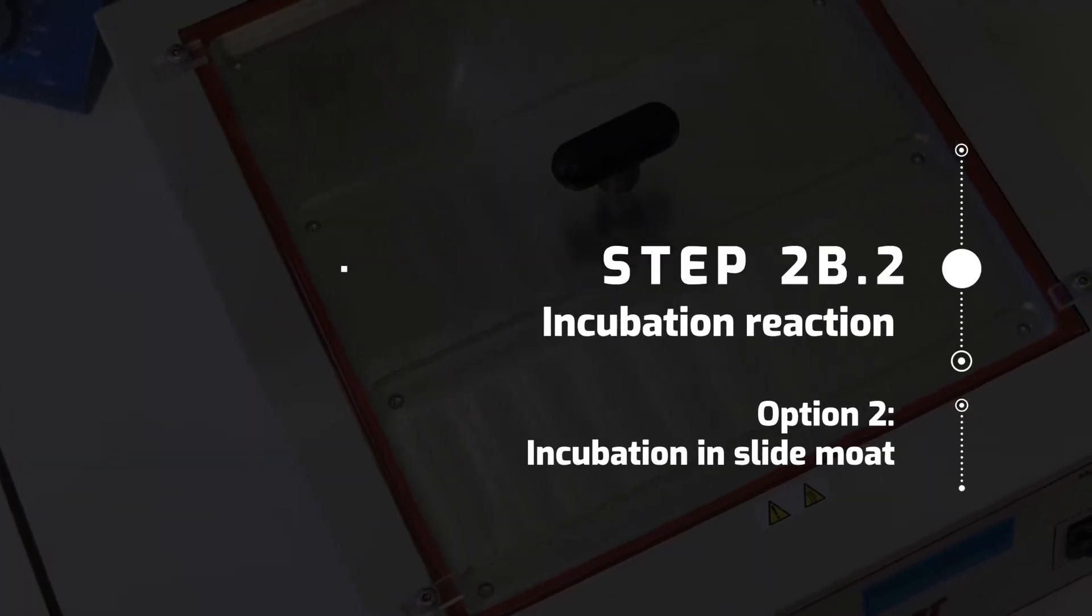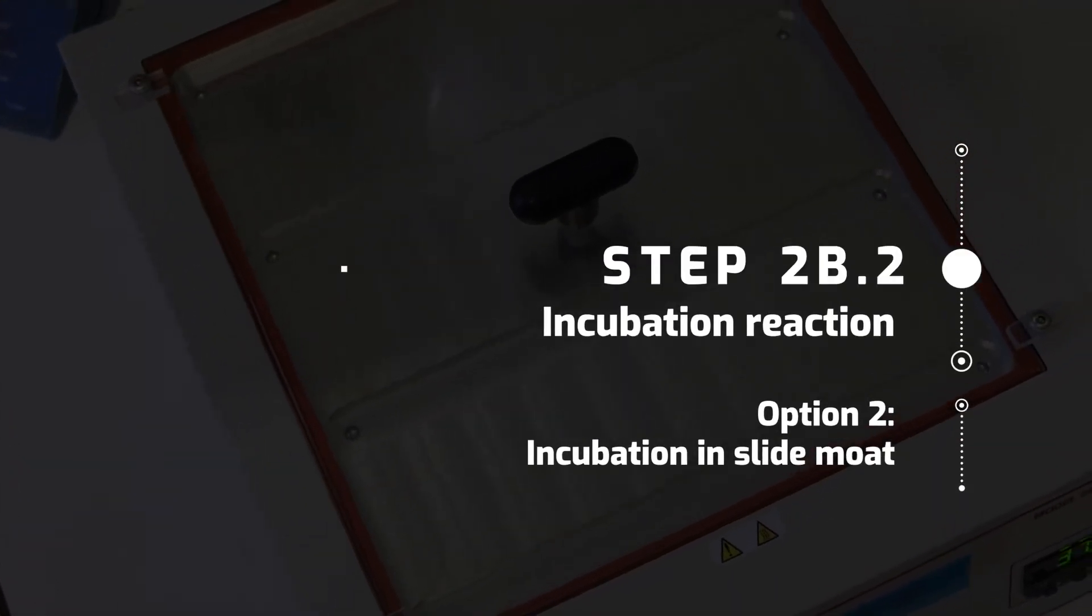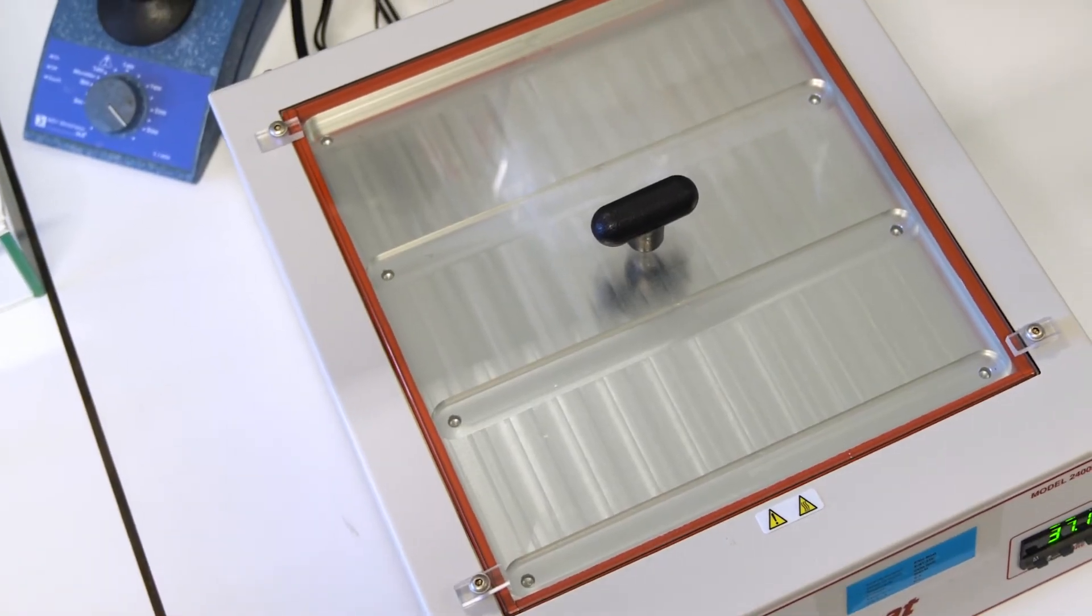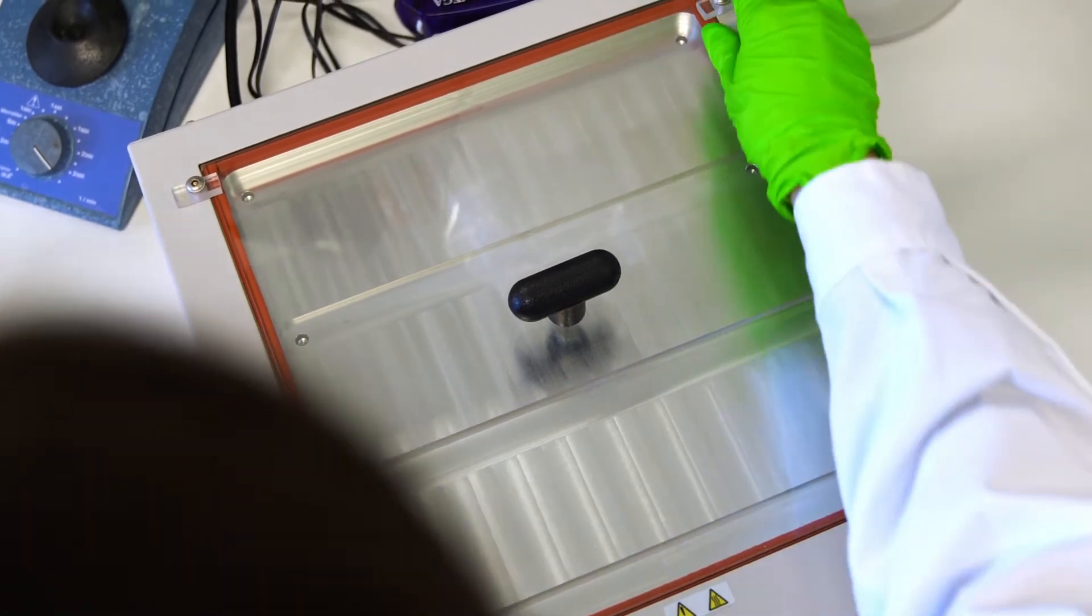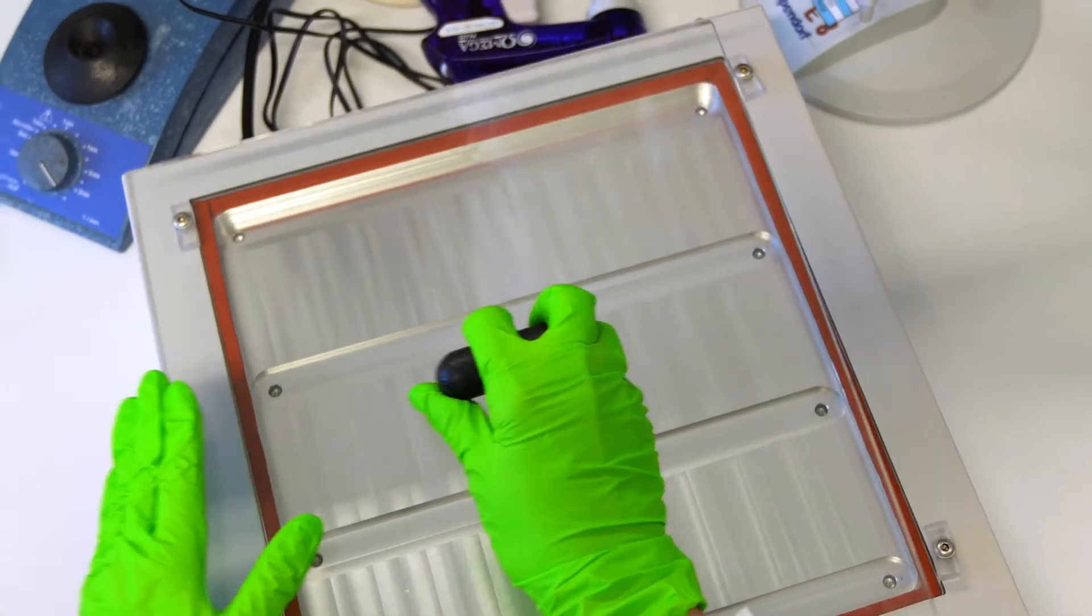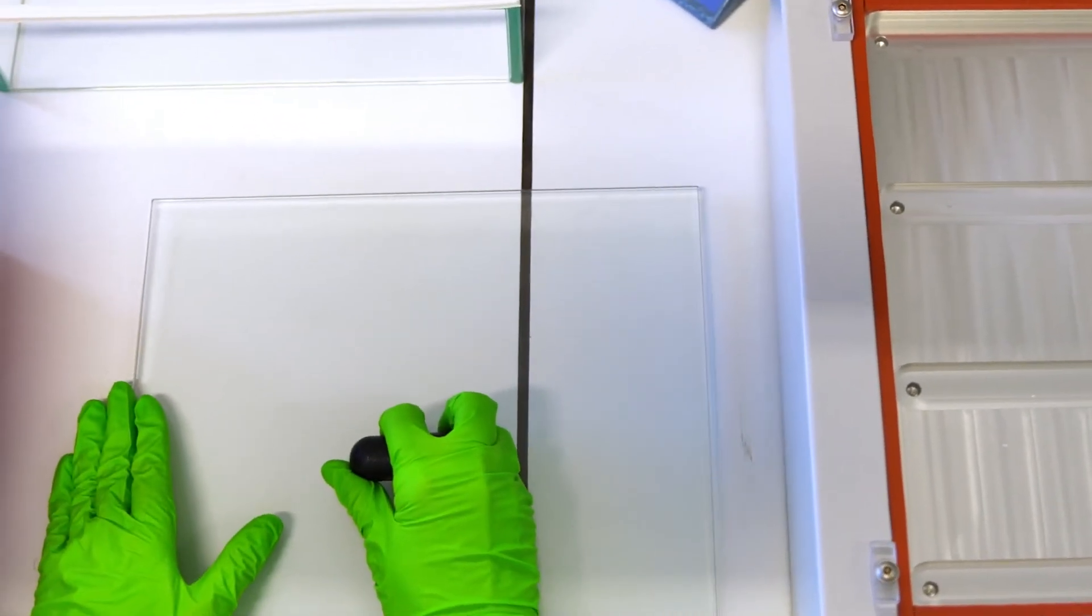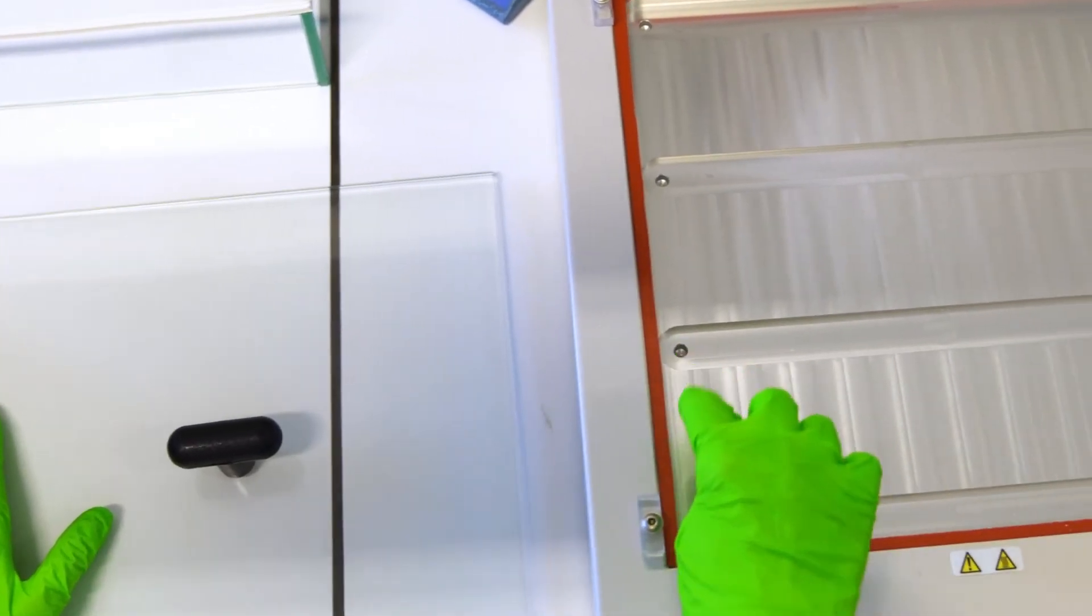An alternative system you can use is a slide mode. You can remove the lid and there are several holes in the grooves. In these holes you can put some water to keep the moisture inside the chamber.